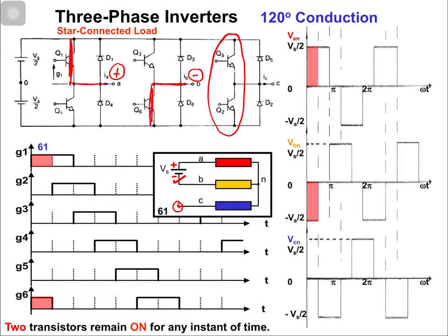Phase C is in the floating state. Van = Vs/2 because there are two equal impedances Z in series with the neutral point at the center. Vbn = -Vs/2. The voltage at point C is zero because it's not connected. Van = +Vs/2, vbn = -Vs/2, and vcn = 0, as marked here.